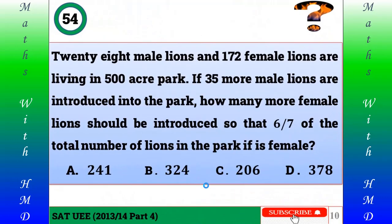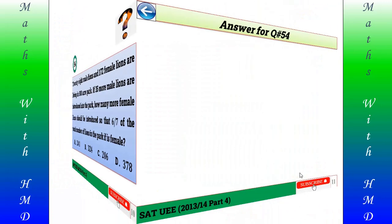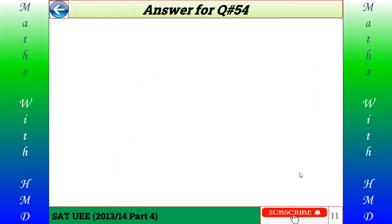Question number 54: 28 male lions and 172 female lions are living in a 500-acre park. If 35 more male lions are introduced into the park, how many more female lions should be introduced so that 6/7 of the total number of lions in the park is female? A) 241, B) 324, C) 206, D) 378. Here is the answer for question number 54.